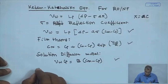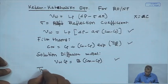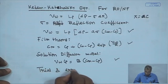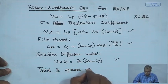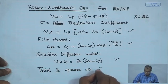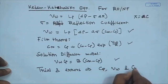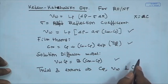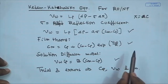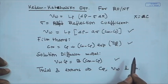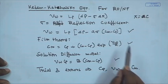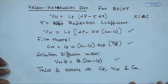By using a trial and error method, this set of equations can be solved to obtain the permeate concentration, permeate flux, and membrane surface concentration. It should be noted that if we are talking about a completely retentive membrane, then the reflection coefficient σ is equal to 1.